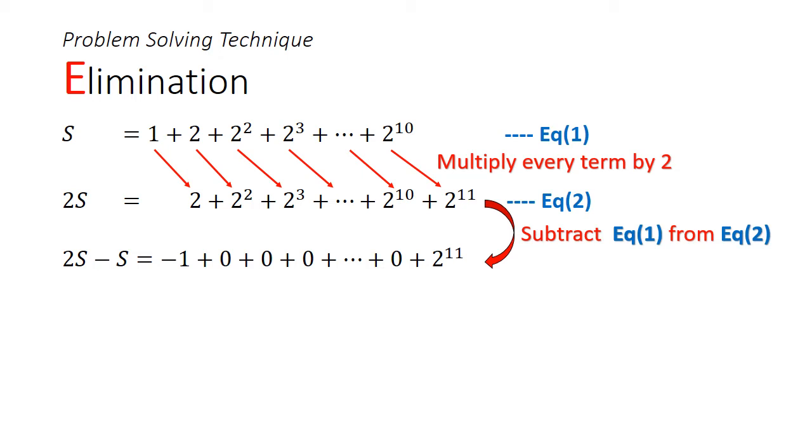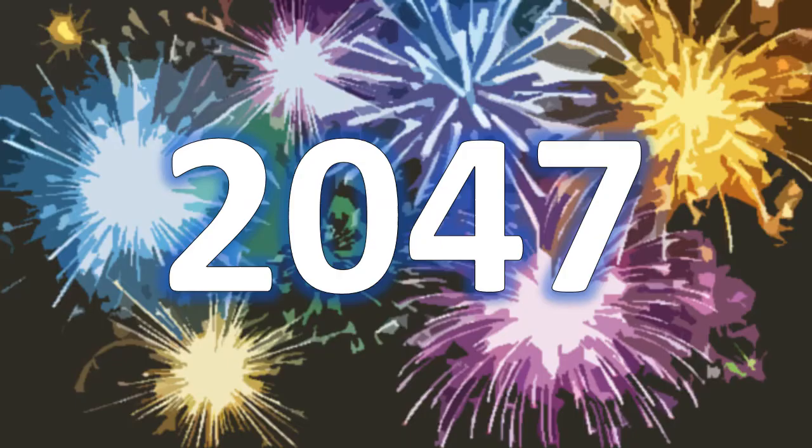on the left hand side, we'll get 2s minus s, which is just s, and on the right hand side, we'll get 2 to the power of 11 minus 1, which is equal to 2047. So the answer is 2047. Did you get the answer?